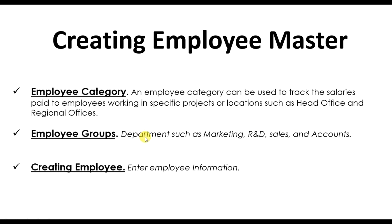For example, if a company has a head office and a branch in Dubai, you need to pay salaries to employees in the Dubai office. Similarly, if you have a branch in Abu Dhabi, you pay salaries to that Abu Dhabi branch. So in the employee category you create the location, project, or office. Employee groups represent your departments — marketing, R&D, sales, production, accounts. Then the third step is to create individual employees.